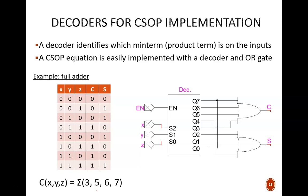So with a 3 by 8 decoder, we can take the outputs q3, q5, q6, q7, and pass them all into an OR gate. This fully defines C.